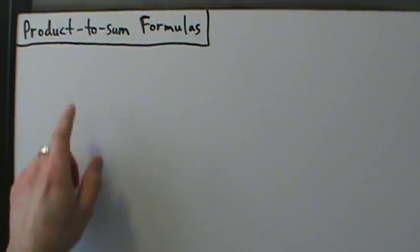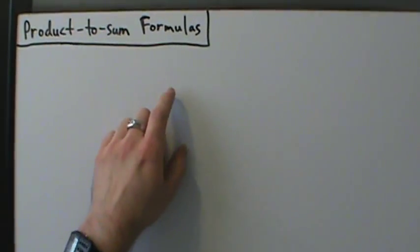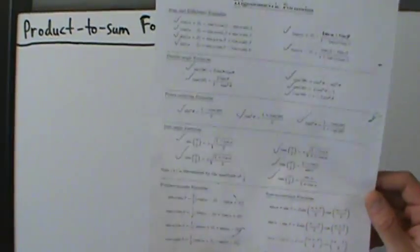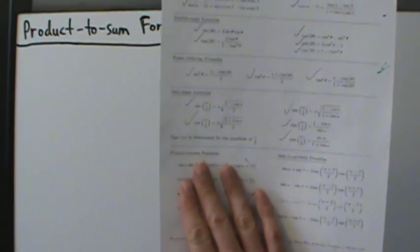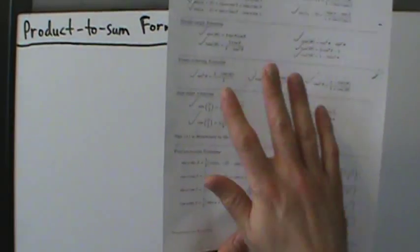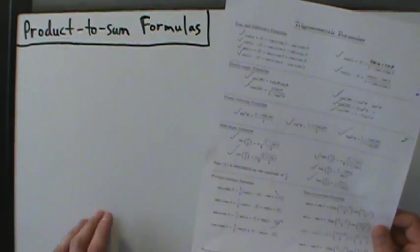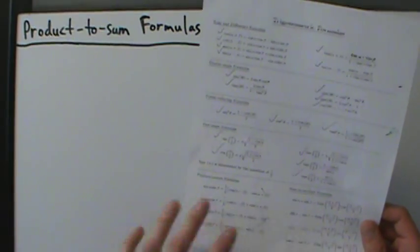Now we're going to start talking about the product-to-sum formulas. If we pull out our formula sheet here, product-to-sum formulas are the next set down below the half-angle formulas. If you want a copy of this to follow along with, check the video description — there's a link in there. You can click that link, open this up, print it out, and follow along if you'd like.